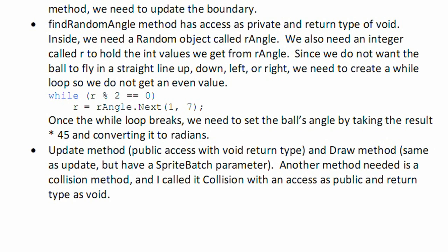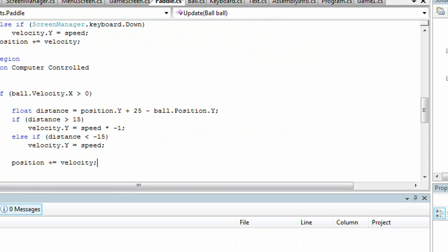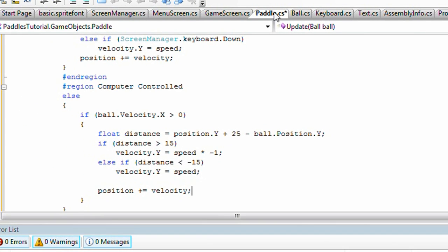Now three more methods. An update method, public access with return type of void. Draw method, public access with return type of void but a SpriteBatch parameter. And another new method called Collision. That will hold the collision of the ball. And it will have a return type of void and access as public. Okay, so let's go into our code and start building the ball class.